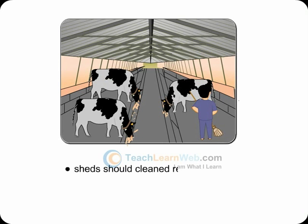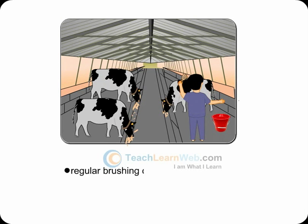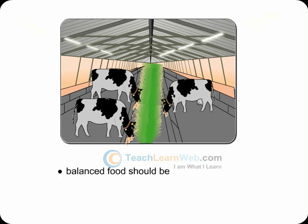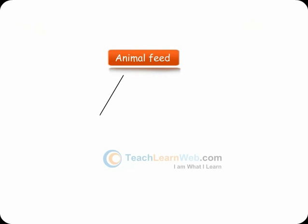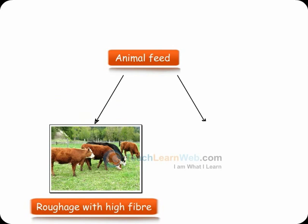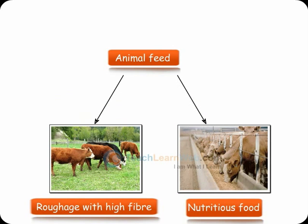Sheds should be cleaned regularly and animals should be brushed regularly. Well-ventilated shelter should be provided and balanced food should be given. Animal feed should contain roughage with high fibre content, concentrates with high levels of proteins, and other nutrients.